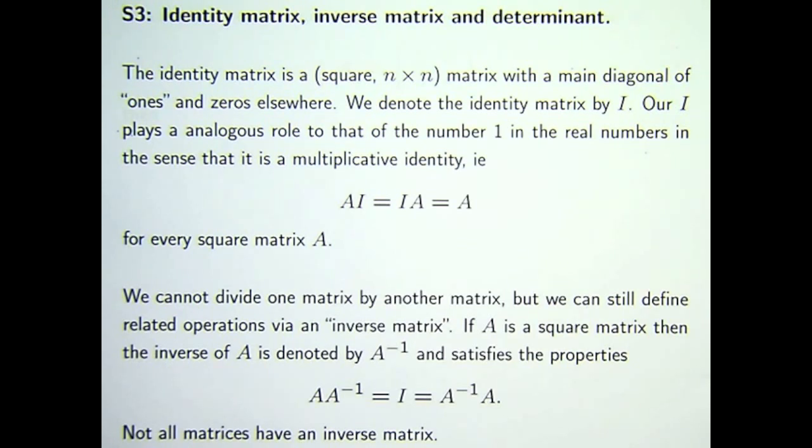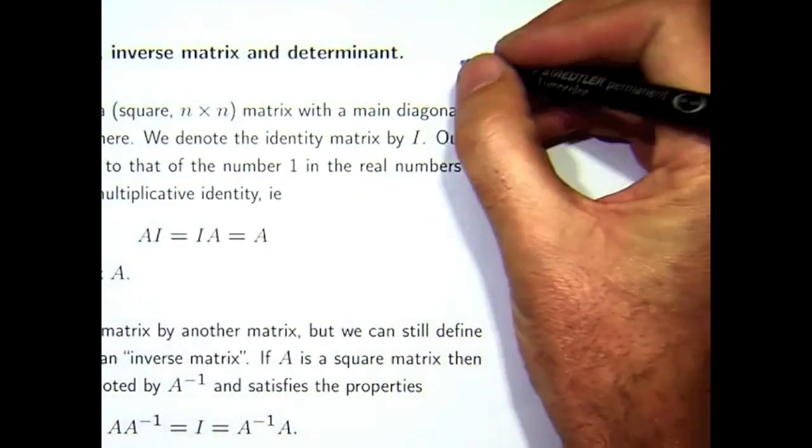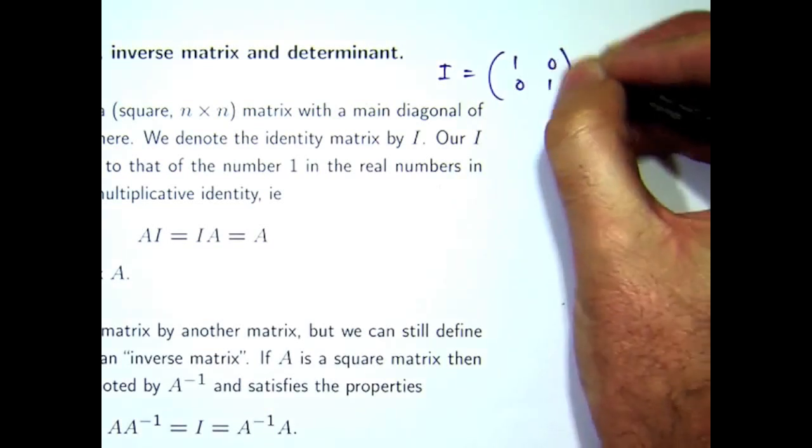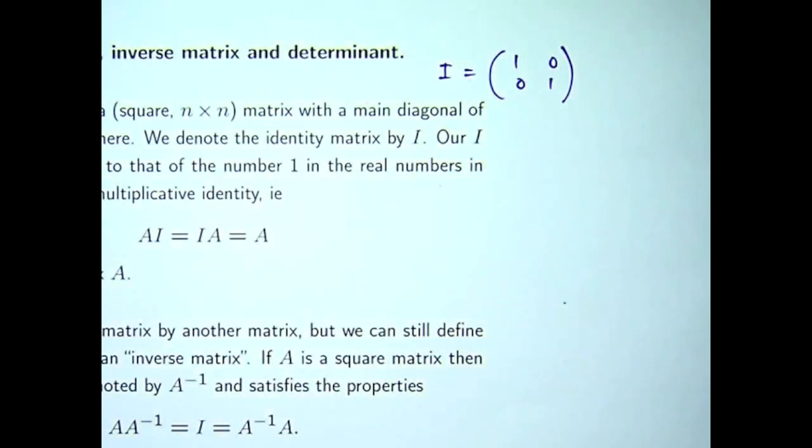Now, the identity matrix plays a similar role in the theory of matrices as the number 1 does in the real numbers. So if I want to write down an example of an identity matrix, this is a 2x2 matrix. And that's the identity matrix in that setting.